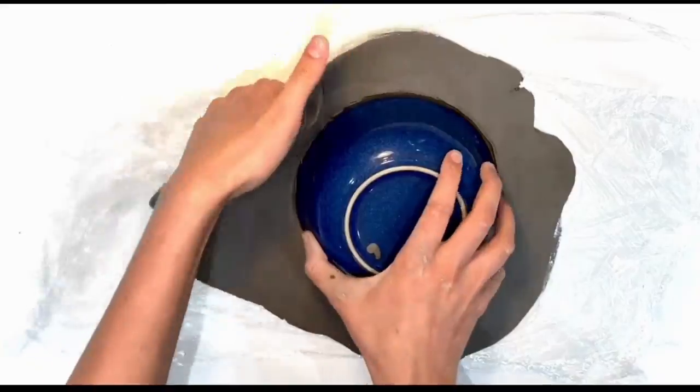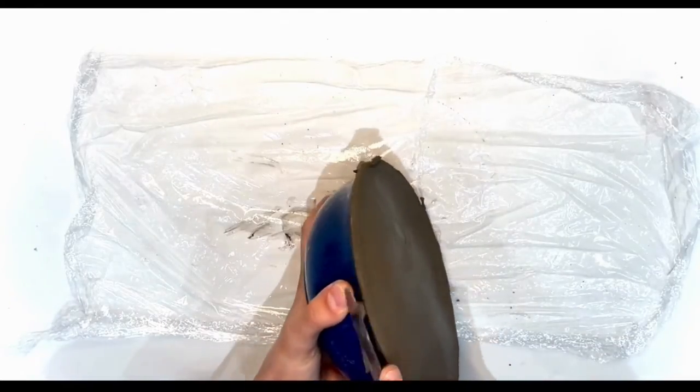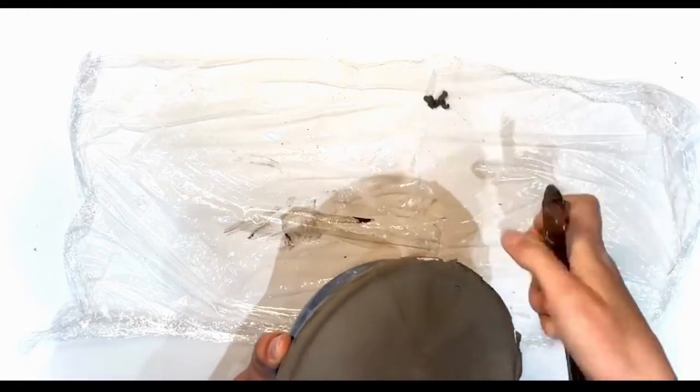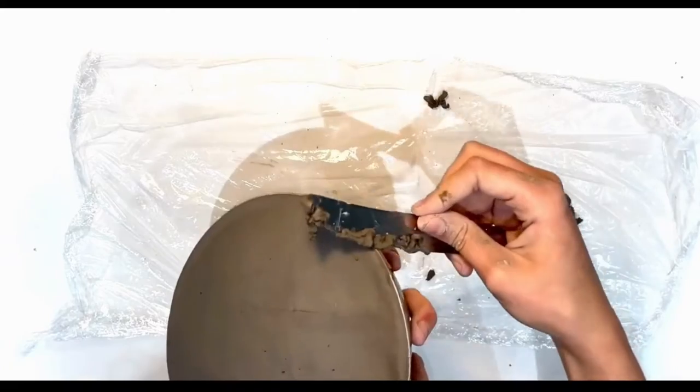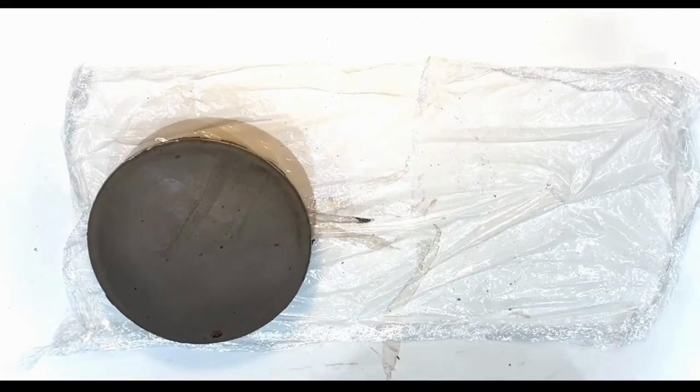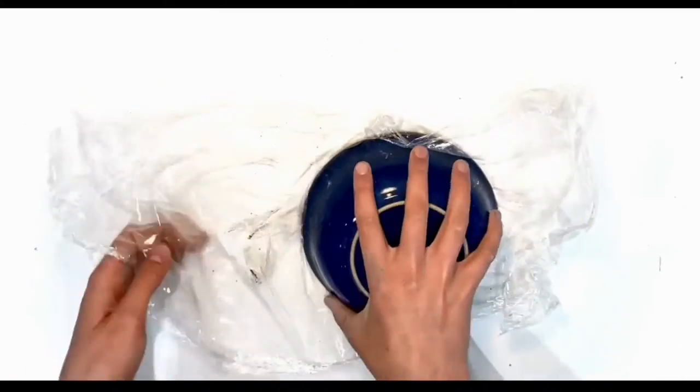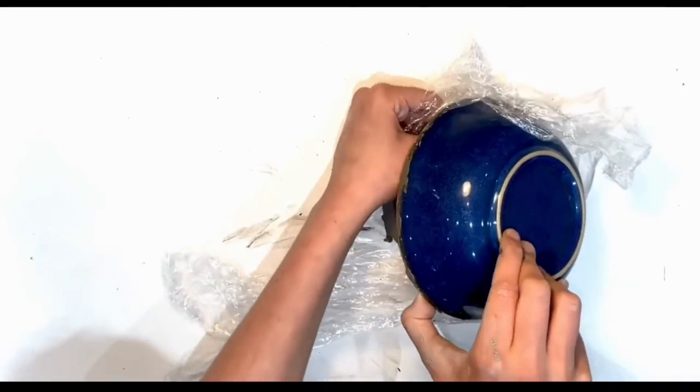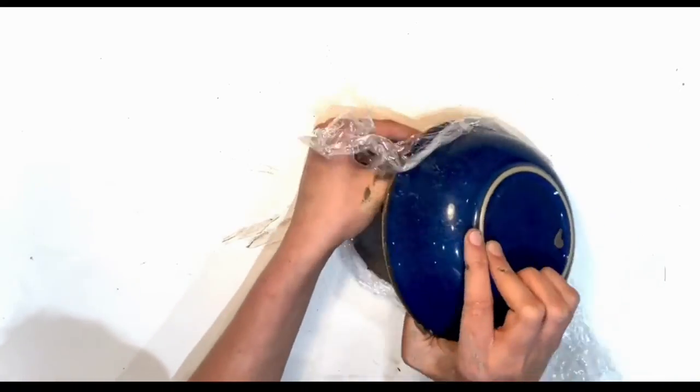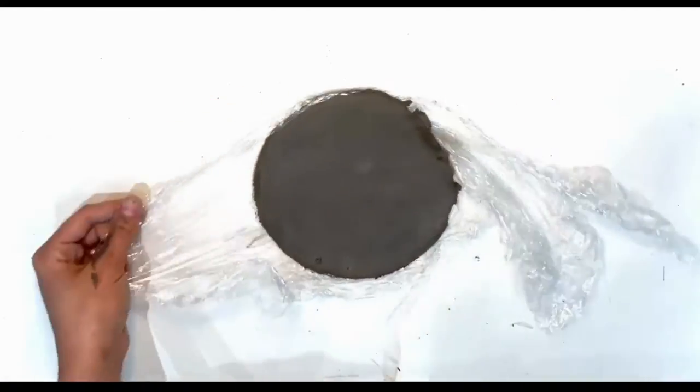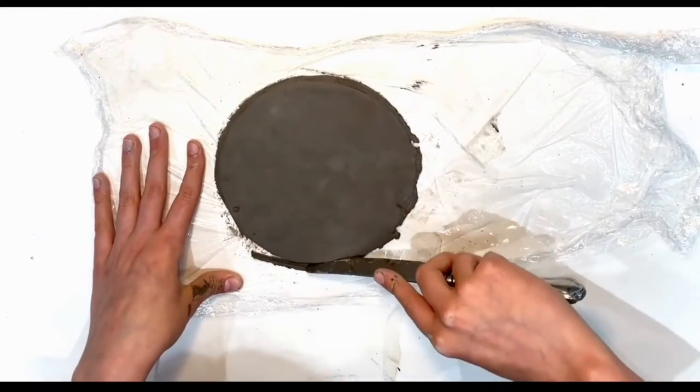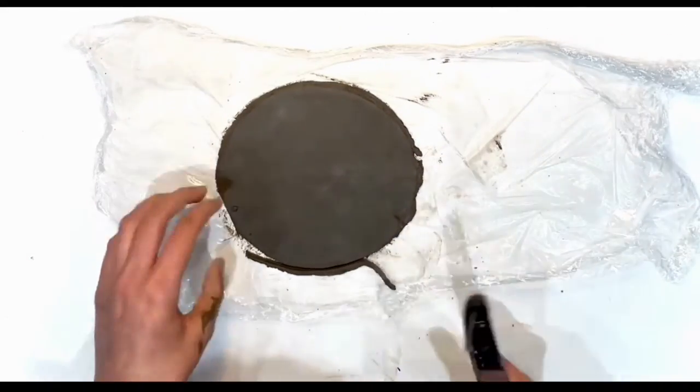Then peel away the excess. Cut along the edge of the bowl to neaten up the edges. Then flip it back onto the cling film and start to peel it off.